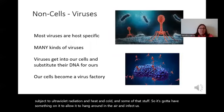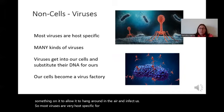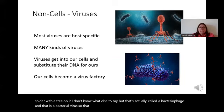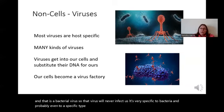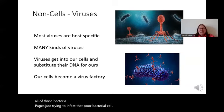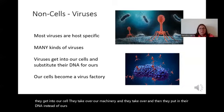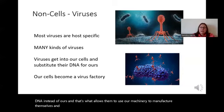Most viruses are very host specific. The image on the top looks kind of like a spider — that's actually called a bacteriophage, which is a bacterial virus. That bacteriophage will never affect us; it's very specific to bacteria and probably even to a specific type of bacteria. The lower picture shows all of those bacteriophages trying to infect that poor bacterial cell. There are many kinds of viruses for plants, for animals, for humans, et cetera. Viruses get into our cell, take over our machinery, and put in their DNA instead of ours, allowing them to use our machinery to manufacture themselves — our little cells become a virus factory.